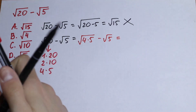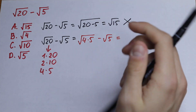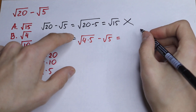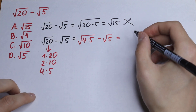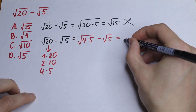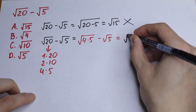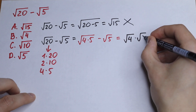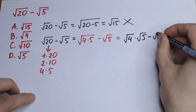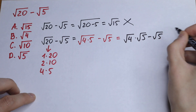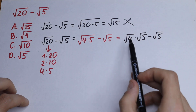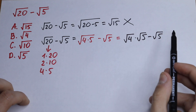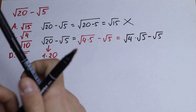Of course we can simplify this further. Using the product rule — if we have a product under the square root sign, we can write it as separate square roots — so square root of (4 times 5) becomes square root of 4 times square root of 5, minus square root of 5.